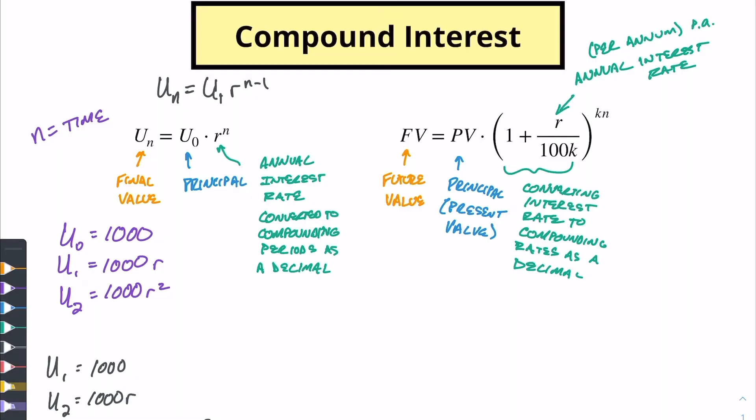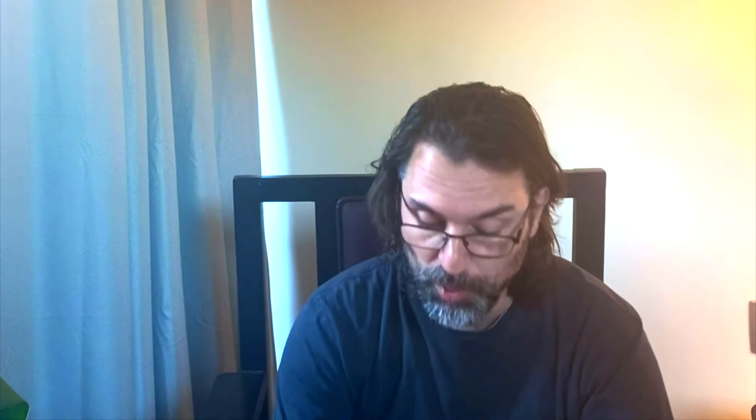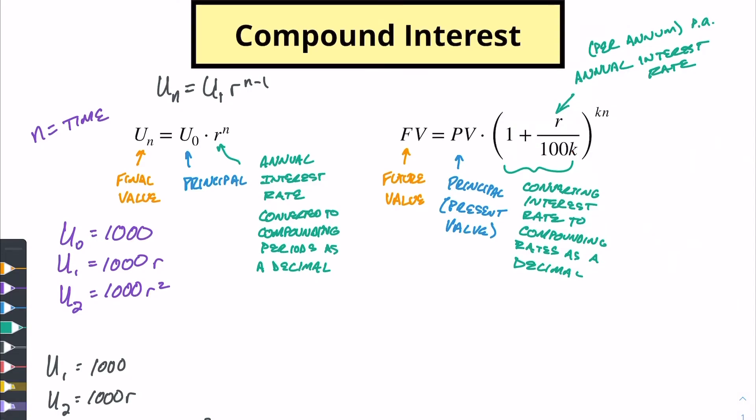So here again over here we do a little bit of work, it's just starting with our annual interest rate. Now this dividing by 100, all that's doing is converting it to a decimal. It's pretty straightforward with that. And then this K is just the compounding period per year.